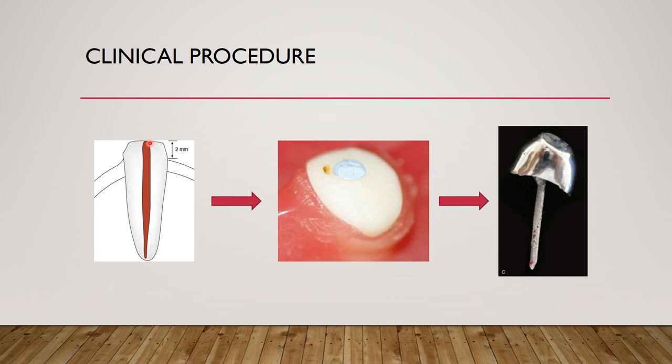In preparation, 2 mm is left above the ridge and the post is placed within the endodontically treated root. The tooth is prepared and left 2 mm above the ridge — you can see the occlusal view and internal view of this preparation. For taking an impression with copings, light body impression material is used and the copings embed naturally, providing retention through undercuts and surface area.